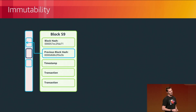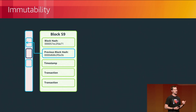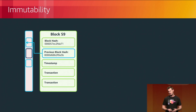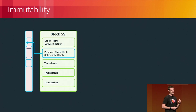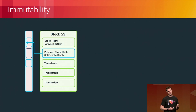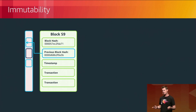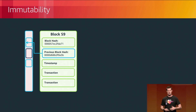How does the immutability part work? Let's look at a situation where you're mining block 59 in the blockchain. You're going to take input values such as the timestamp of the block and the transactions you're looking to verify, and then miners will compete to find a random nonce value that, put through a hash function, gives a hash with a certain number of leading zeros. The more leading zeros required, the more difficult and longer it takes.